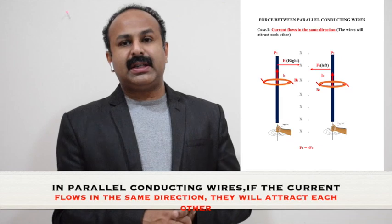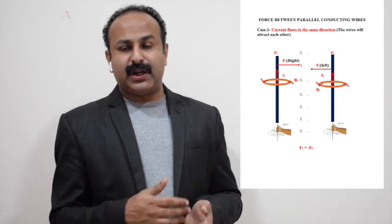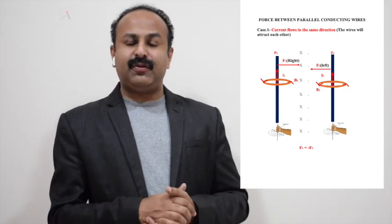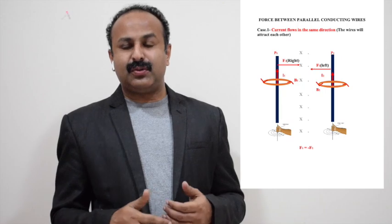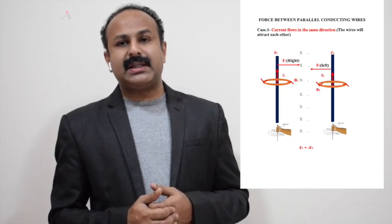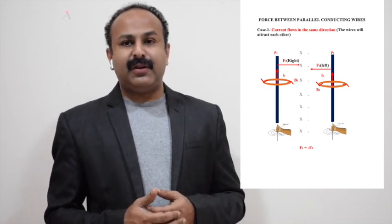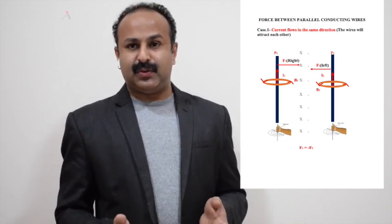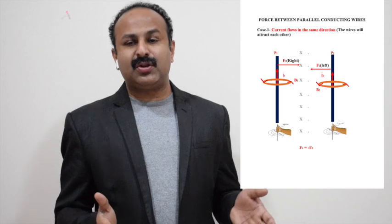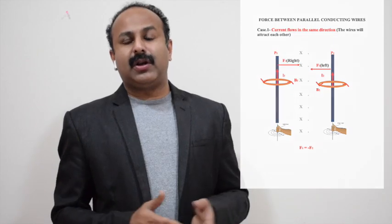Let F1 be the force produced by wire 1 and F2 be the force produced by wire 2. Then F1 is equal to minus F2, since these two forces act in opposite directions.